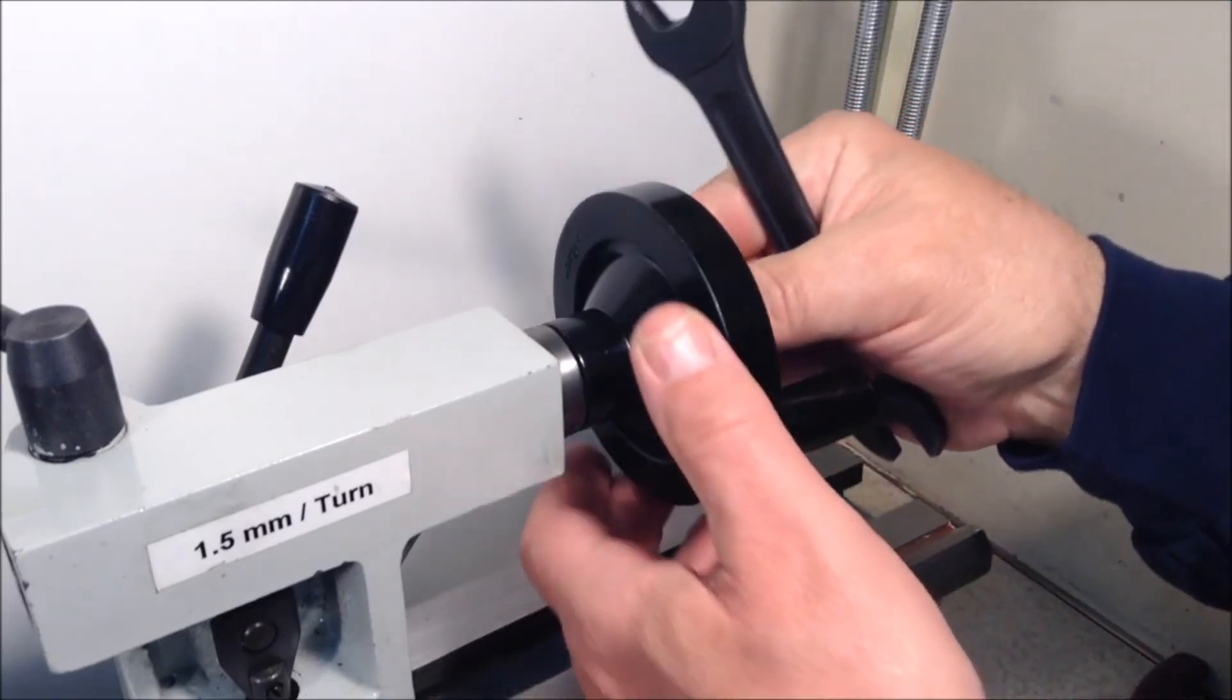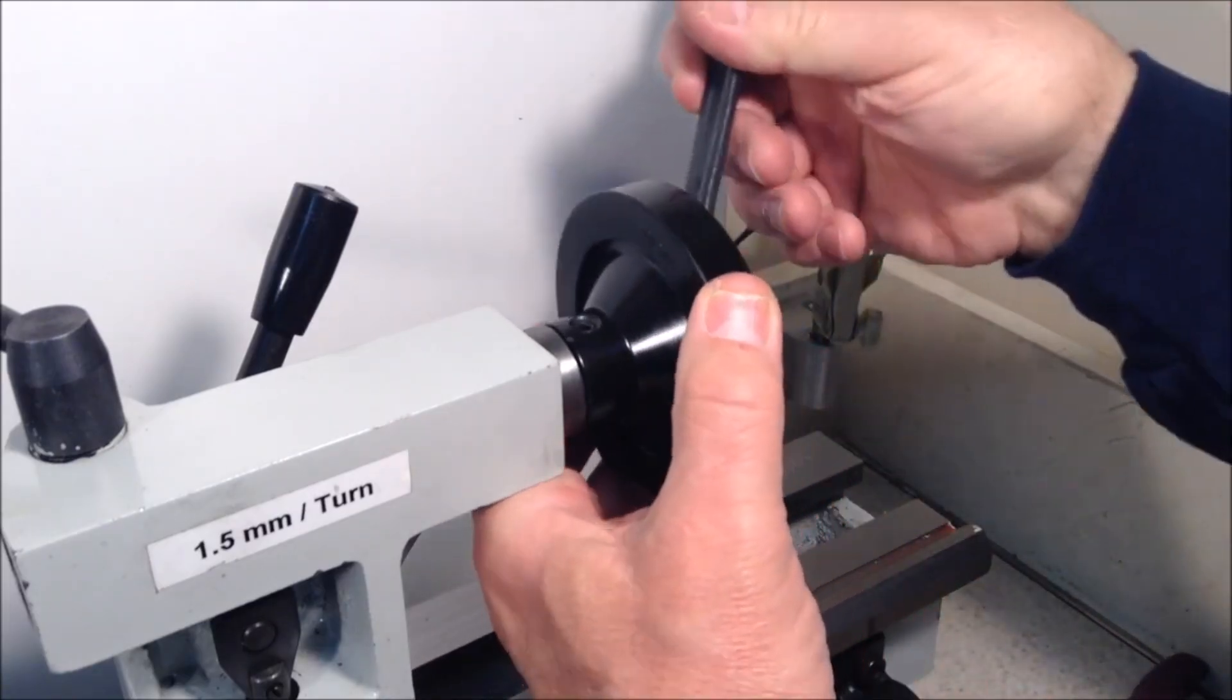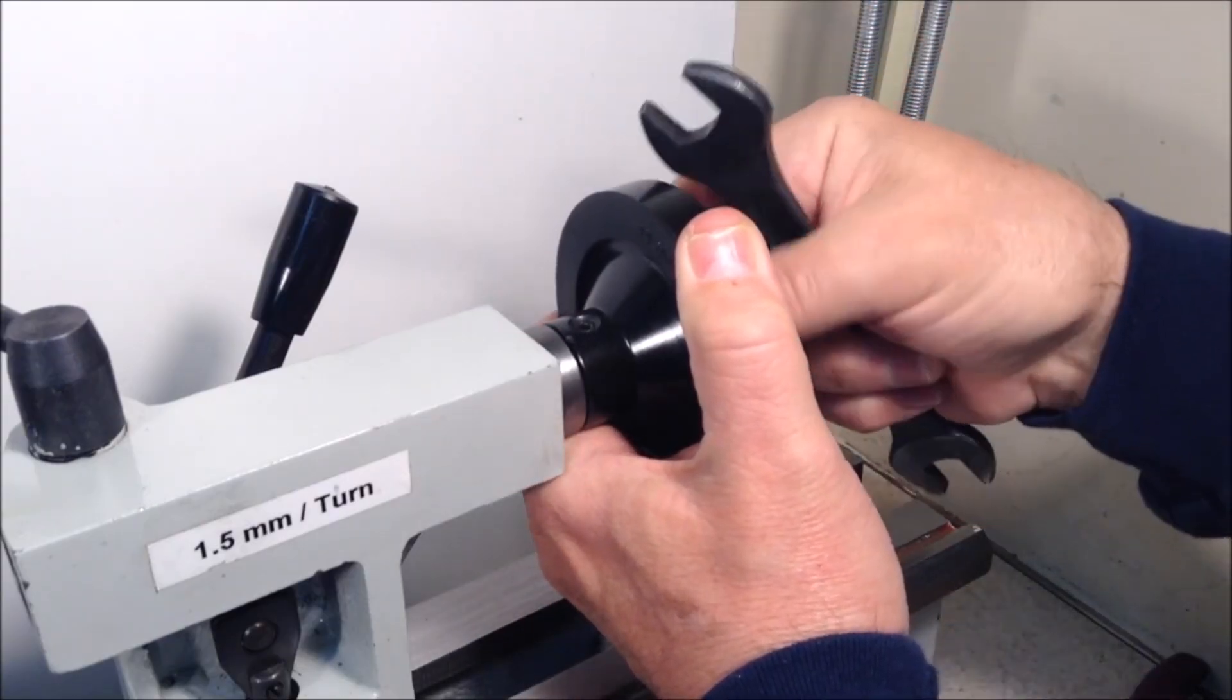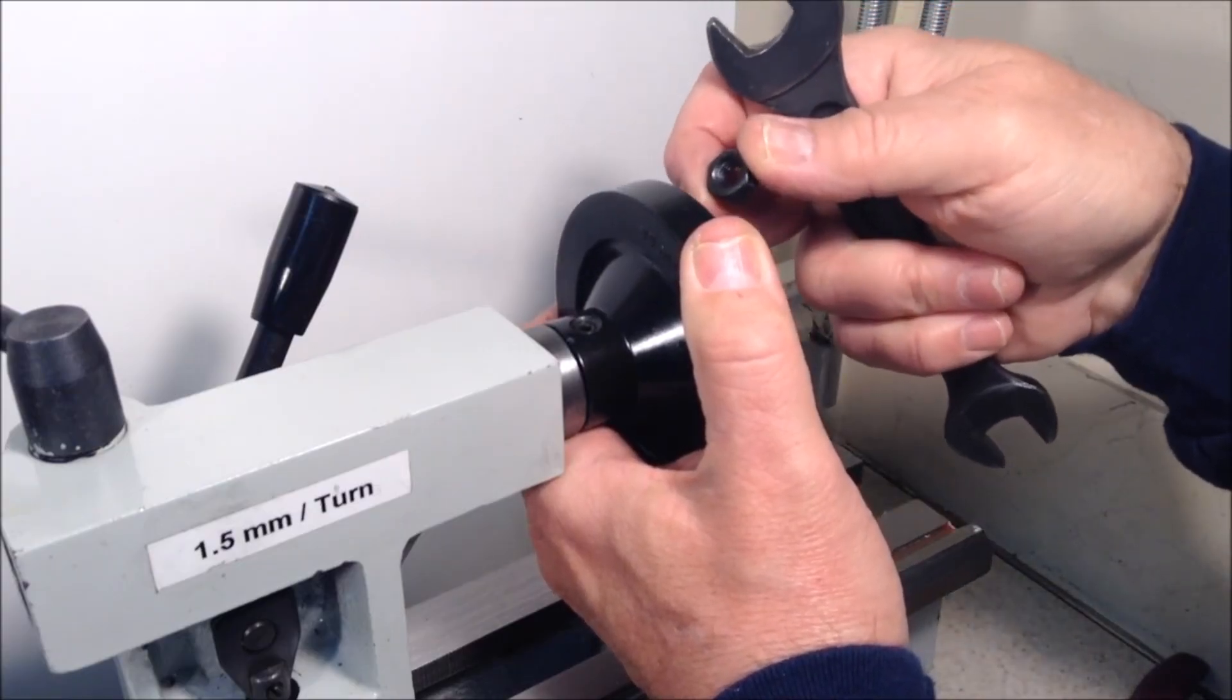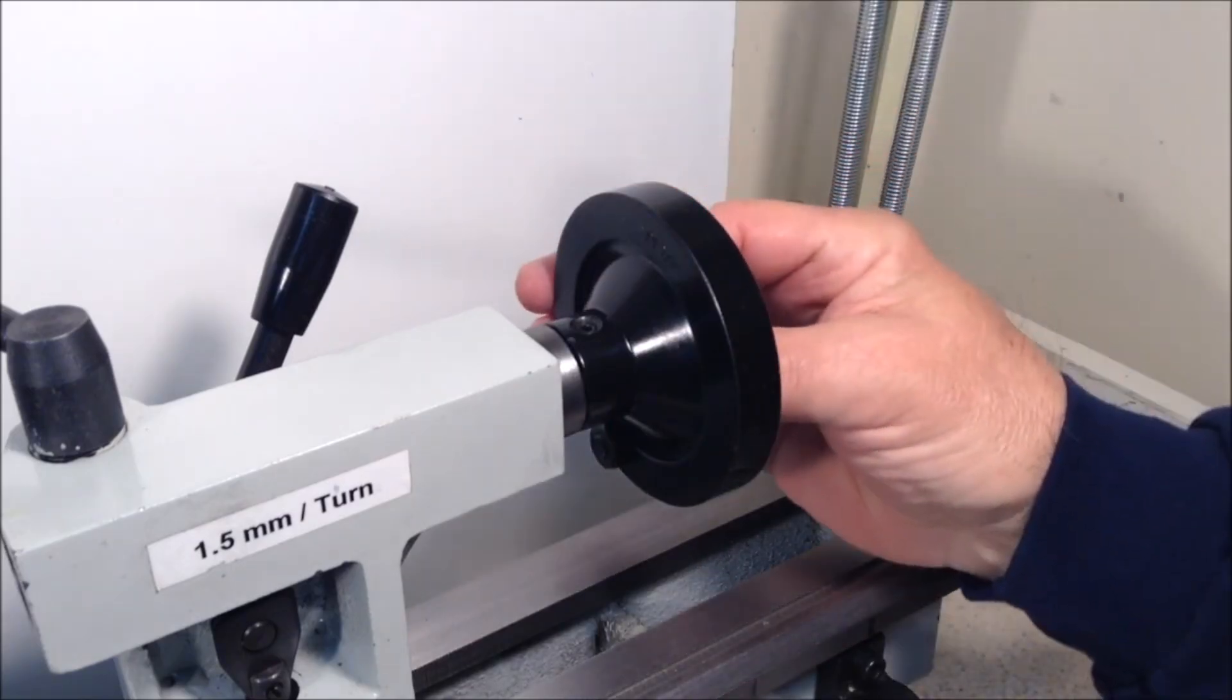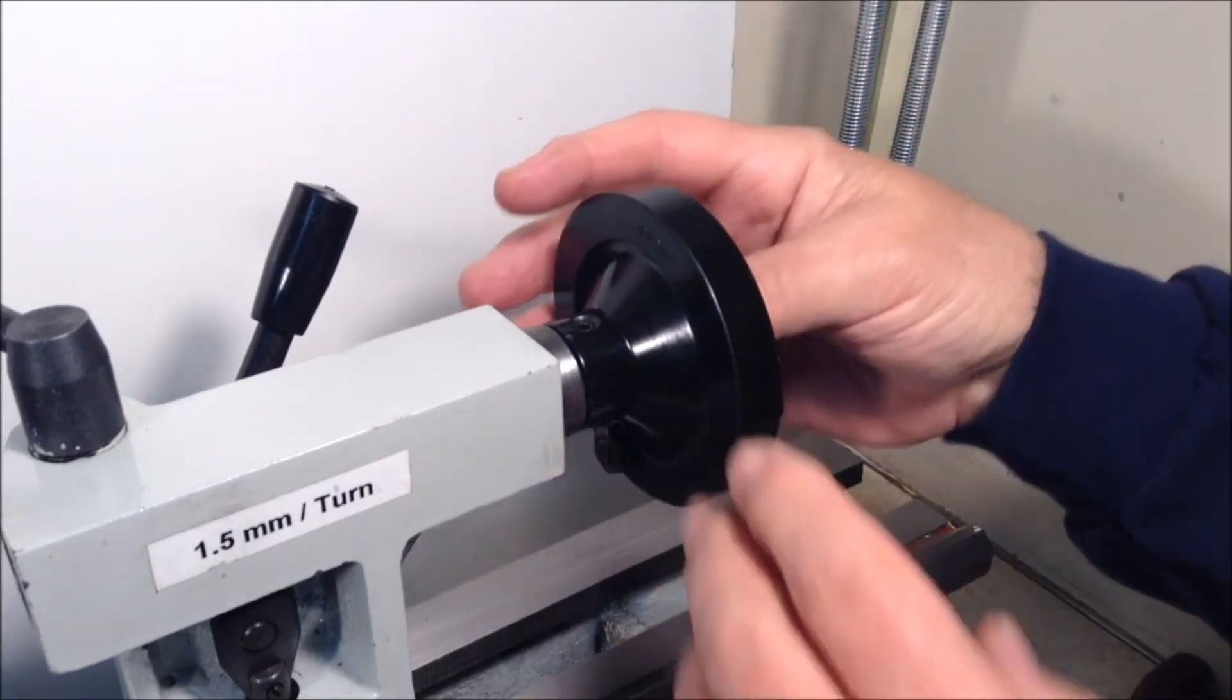Next, we want to remove the 14 millimeter nut that holds the tailstock hand wheel in place. You just hold the hand wheel and reach back in here until you get that loose, and then you can just twist it off. There may be a washer back there too. I don't have one on my lathe. I think there may have been one originally, but there isn't now. Just watch out for that so you don't lose it.